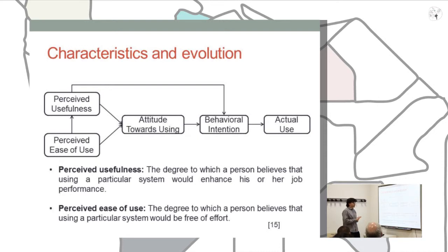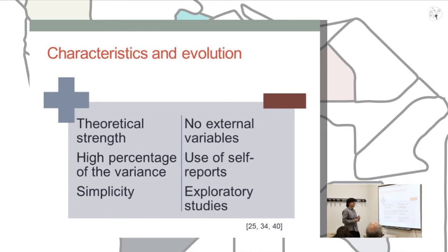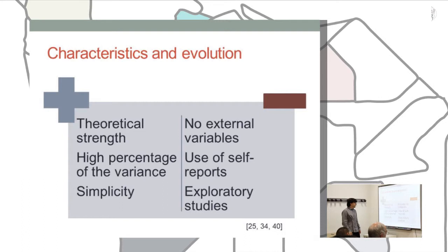Davis built an instrument based on a Likert-type scale to measure these constructs through self-report. The main advantages of the model are its theoretical strength, the high percentage of variance it explains, and its simplicity. The main limitations are the lack of specification of external variables, the reliance on self-report measures for actual use, and some issues identified in exploratory studies.